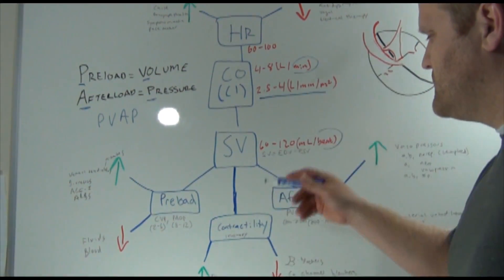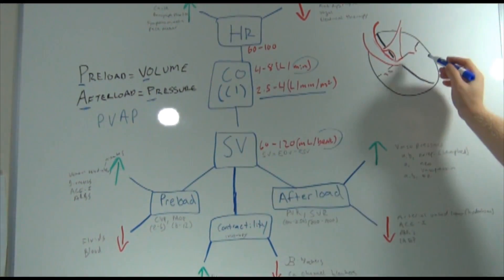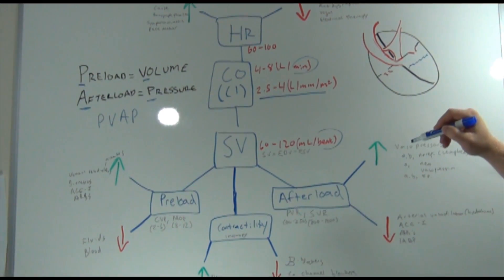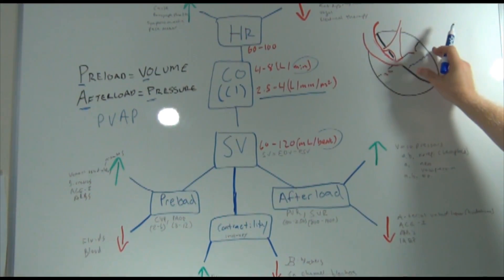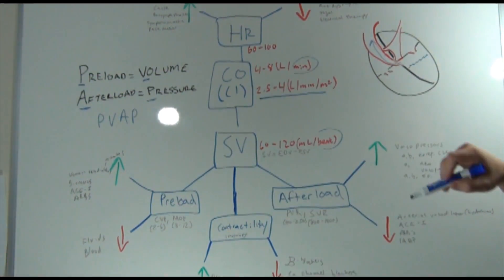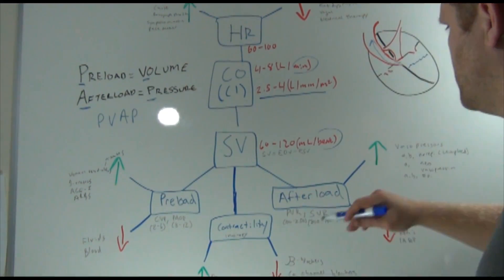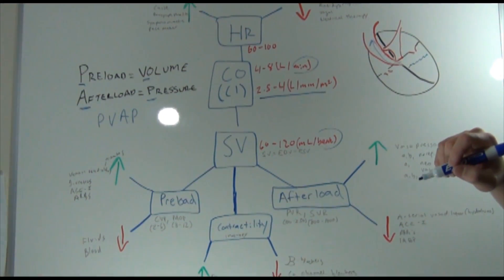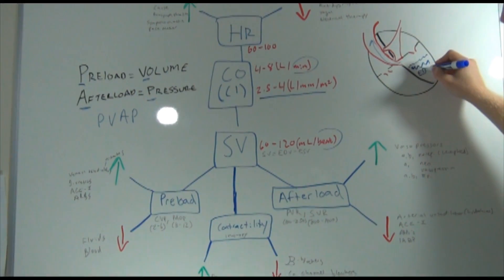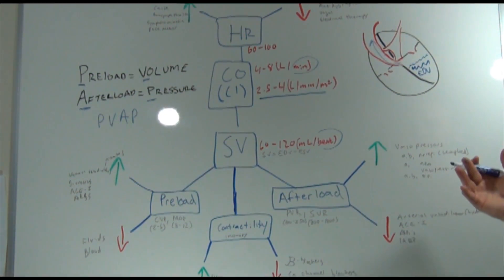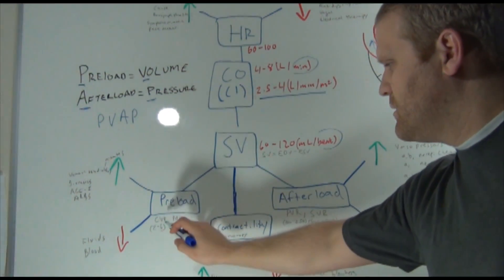The three things that directly affect stroke volume are: contractility — the squeeze of the ventricles; preload — which is the volume in the ventricles at end diastole; and afterload — the pressure the ventricles must squeeze against to push blood out through the aorta.